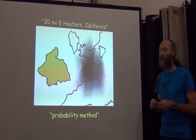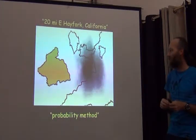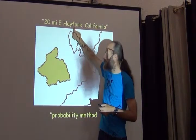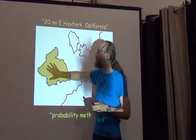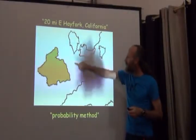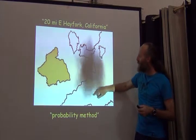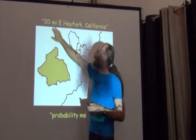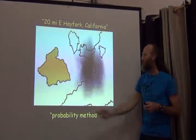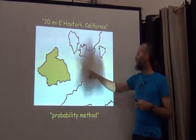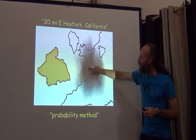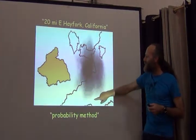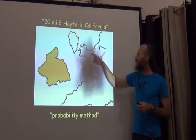There is another way — never used in practice so far, but an interesting concept — called the probability method. On one side we have a polygon representing the shape of a town called Hay Fork. On the other side, in a shaded area, you can see the basic shape of Hay Fork, but our locality description is '20 miles east of Hay Fork.' So we center the location 20 miles to the east, and the rest of the shape takes into account the probability that that place is in that location.